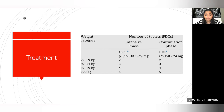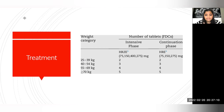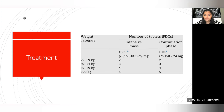In adults, the FDC weight categories are: 25–39 kg — two tablets of the FDC. HRZE is available as a red-colored packet, and HRE as a green-colored packet. 40–54 kg — three tablets. 55–69 kg — four tablets. More than 70 kg — five tablets. Along with this, always give pyridoxine.